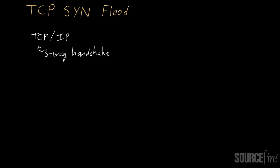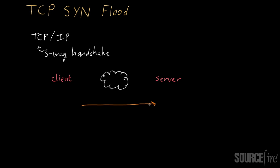To begin with, let's say you have two parties — we typically think of them as a client, and the client wants to communicate with a server. They're communicating over the internet, so there's the internet in the middle. The way that works is the client begins by sending a request to the server — a request to initiate a connection. This request involves a message typically called a SYN message, which is basically the client indicating to the server that it wants to connect. It's essentially a message of intent.